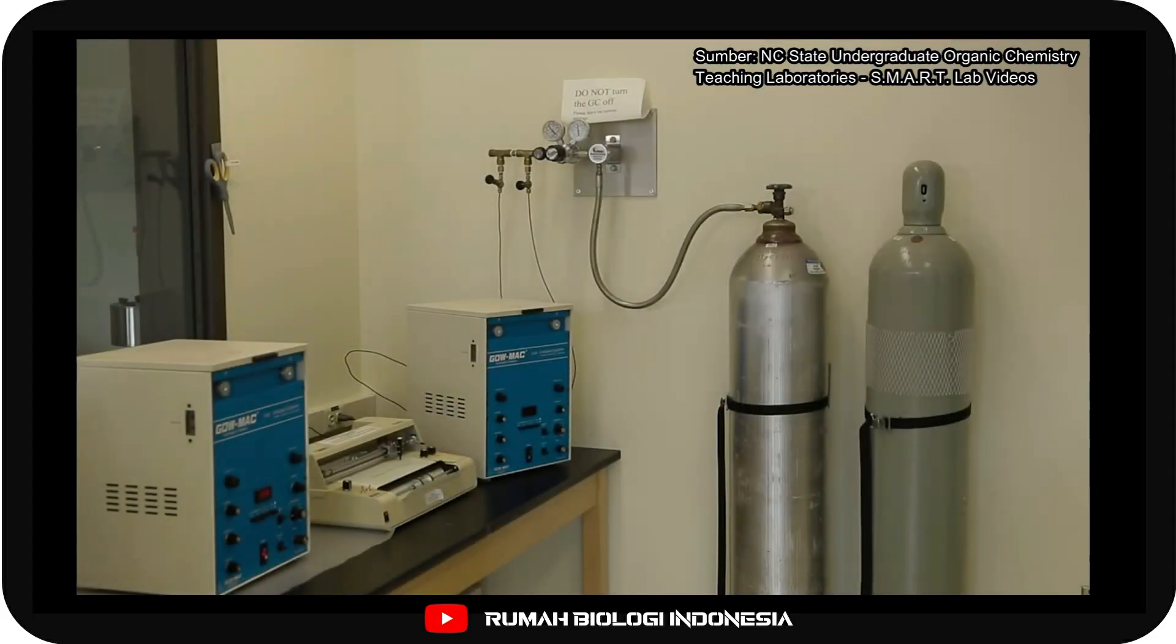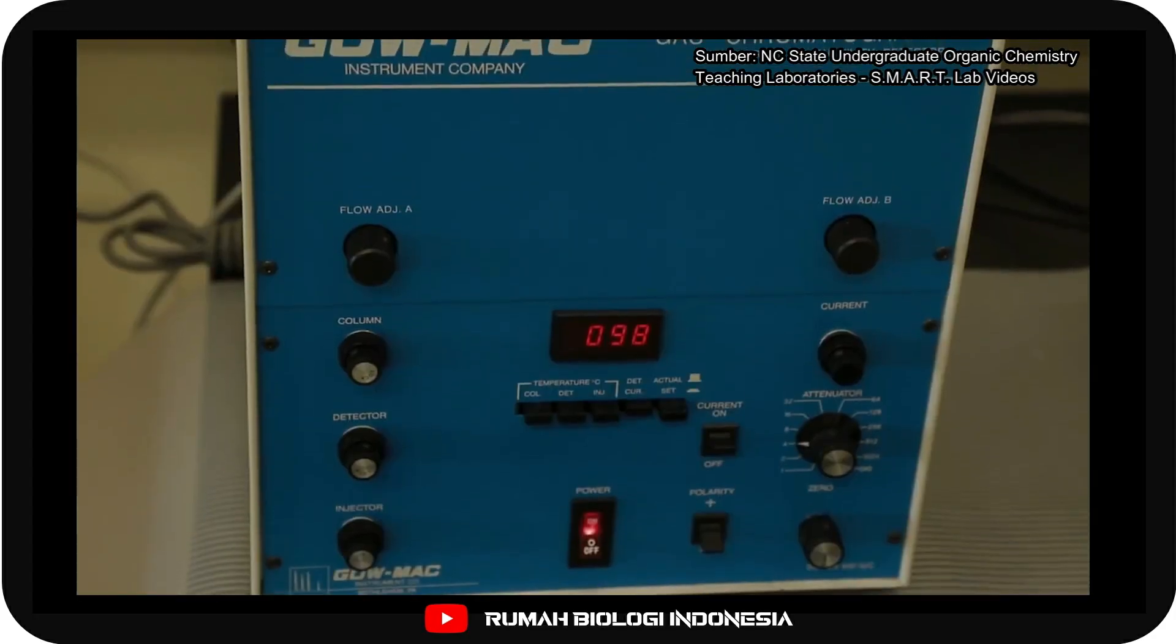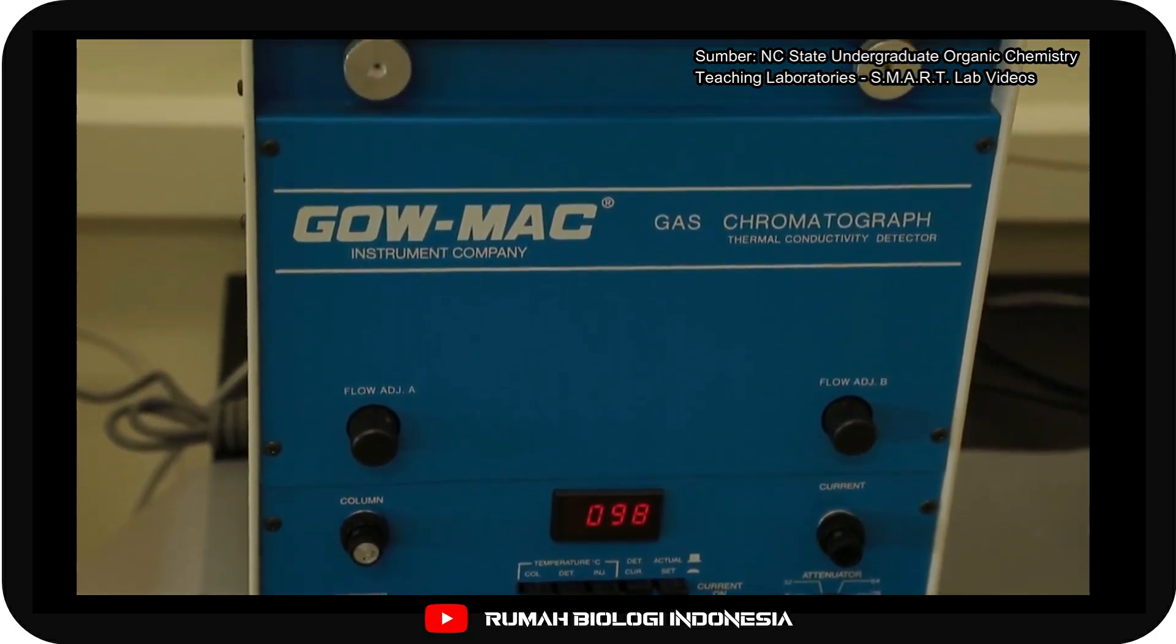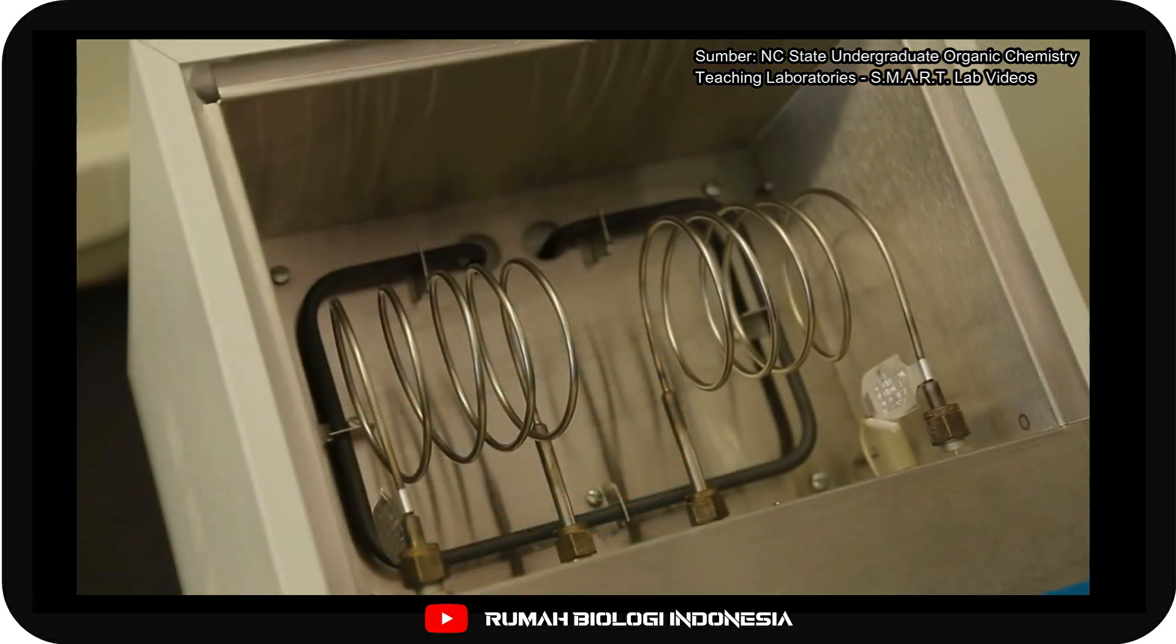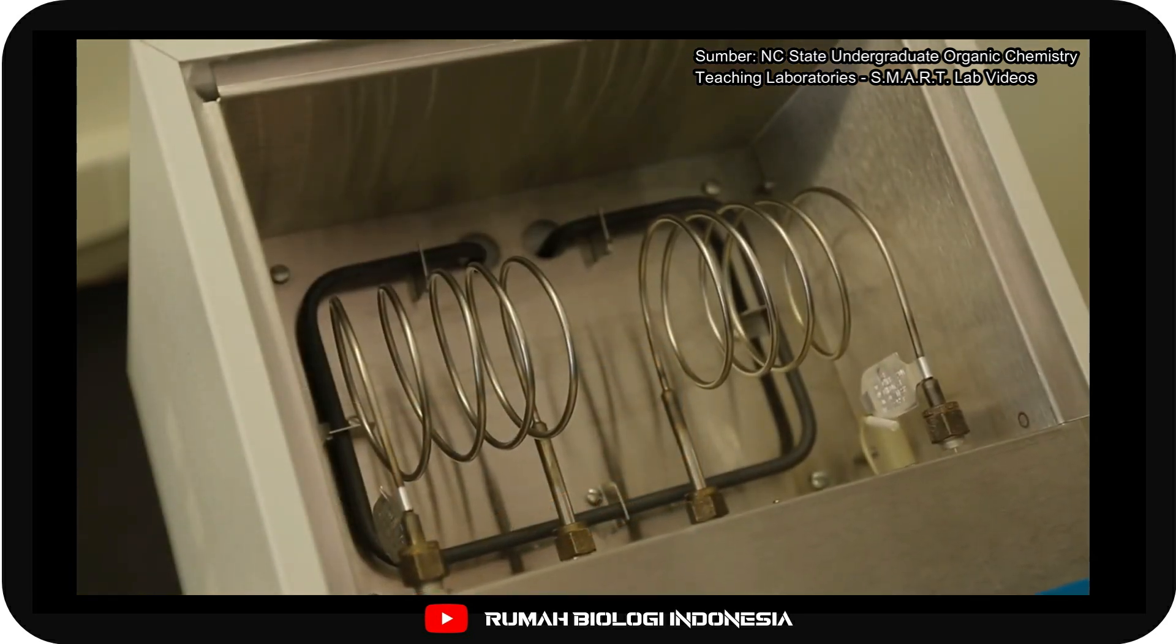To perform gas chromatography, often called GC, we use a gas chromatograph. A gas chromatograph is an instrument with a long column filled with small particles coated with a very thin layer of an adsorbent. This layer is the stationary phase of the column.